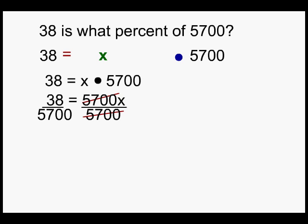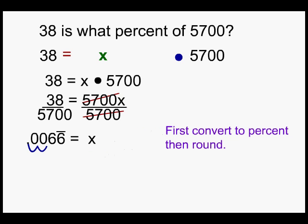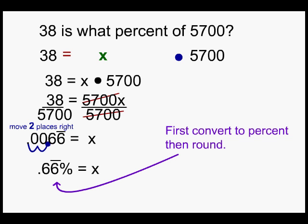When we do that we get X equals 0.0066, which is repeating. Since we're looking for a percent, we need to convert from the decimal to a percent by moving two places to the right. Our final answer is 0.66 percent.